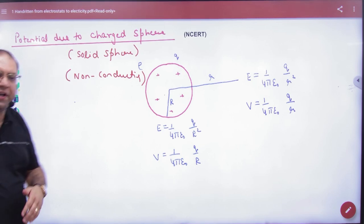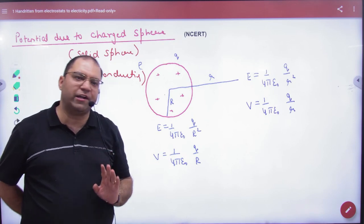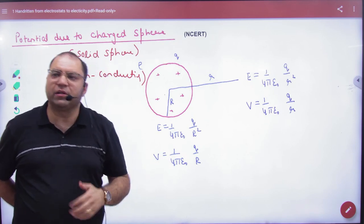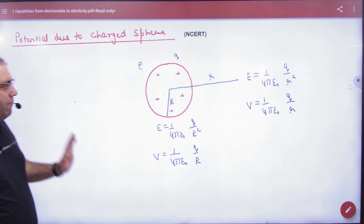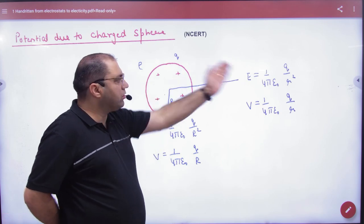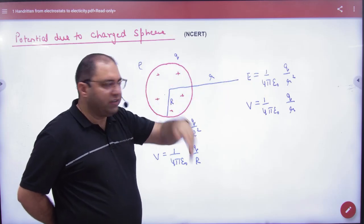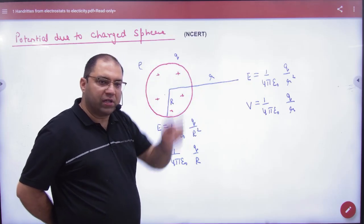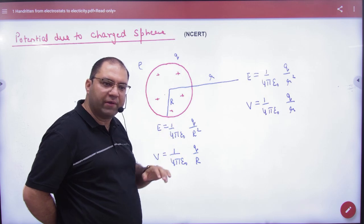In solid sphere, the electric field intensity, there is no question in NCERT. Potential is very far, so we will note the formula in the end. First of all, shell's formula is repeated. Shell and solid sphere outside E's formula is the same. V's formula is the same. Surface on E's formula - shell and solid sphere same, so V's formula also same.